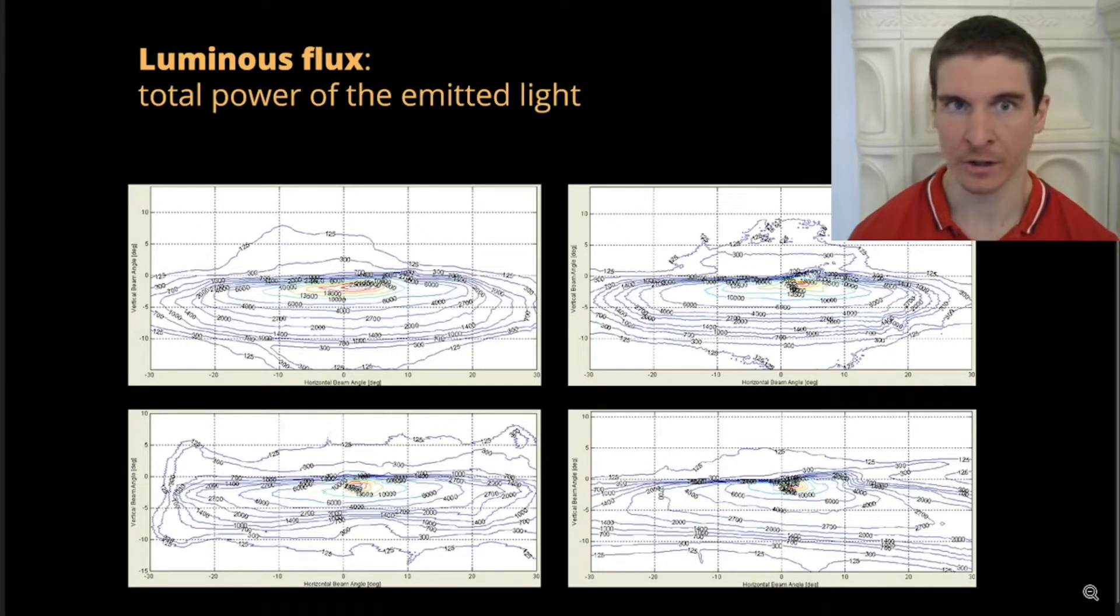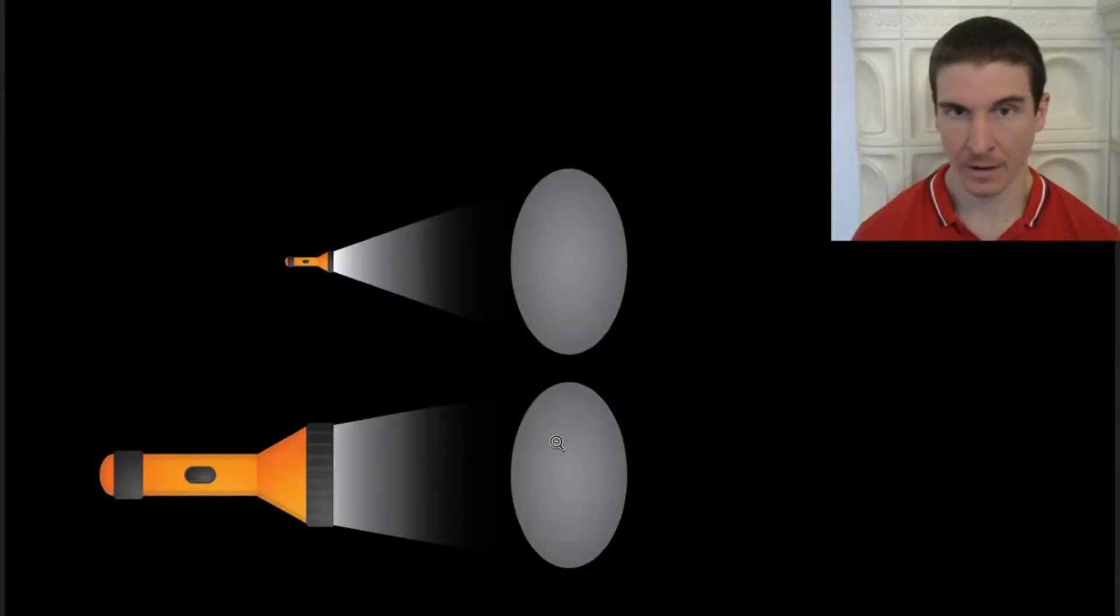Road illumination is a factor of luminous flux, so the total light power emitted by the light source, and how that light is distributed on the road, which is called the beam pattern and is quite tightly regulated. But the same beam pattern can be achieved from two equally powerful lamps, one with smaller luminous surface, and that one is going to have higher luminance.